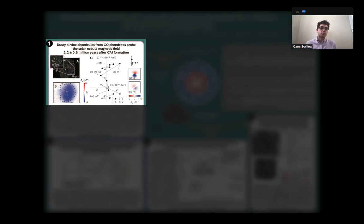We also use the QDM to obtain maps from those samples to determine from where within the samples the magnetic signal was coming from, and if that was consistent with the location of the dusty grains.